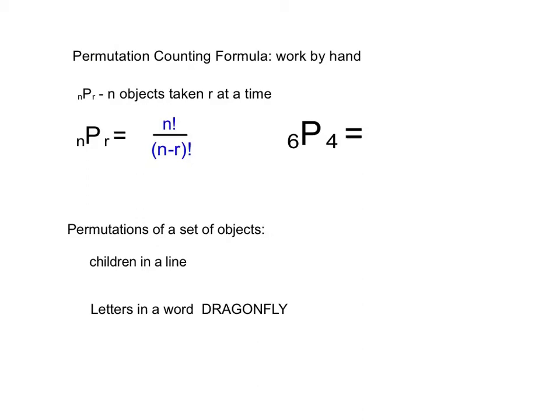There are a couple of things going on here. There's some notation, and then there's also a formula. We recognize the factorial, the exclamation point. And so permutations of n objects taken r at a time is written just like this, nPr.